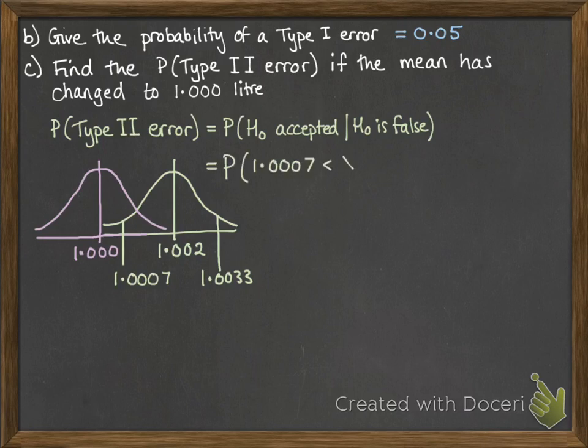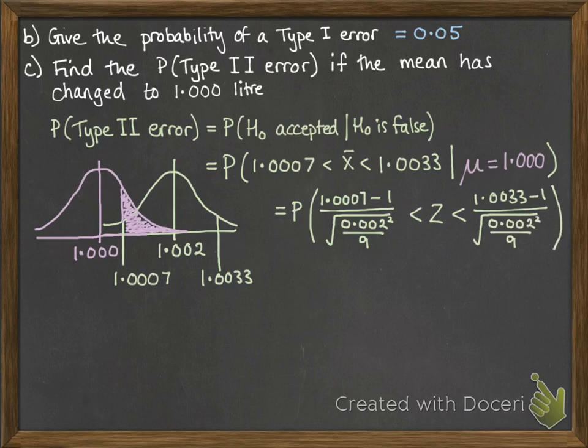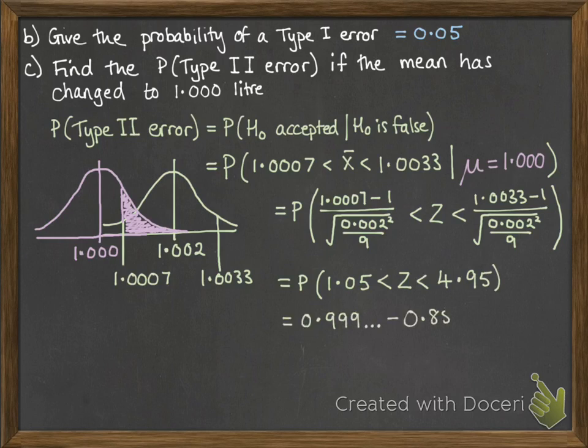So now we need to work out what's the chances of getting within that region on the new distribution, given that the mean is 1 instead of 1.002. So it's this portion here. Anything that would have ended up between those two numbers but on that purple distribution. So to the right of 1.0007. So we work out the probability of that happening on that distribution. And we get the following numbers.